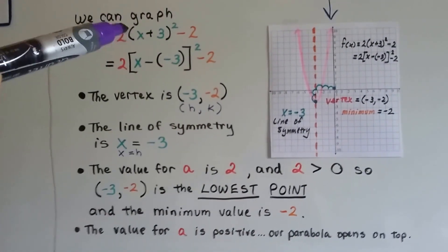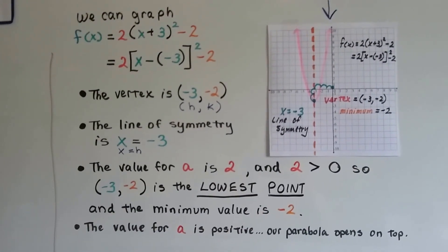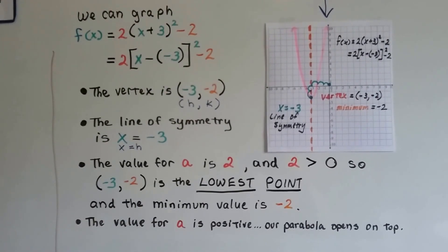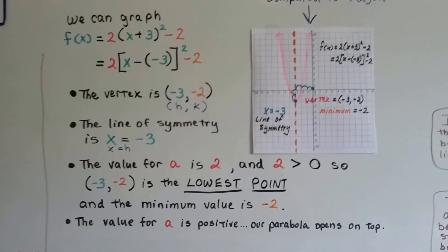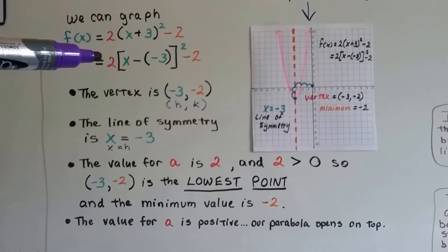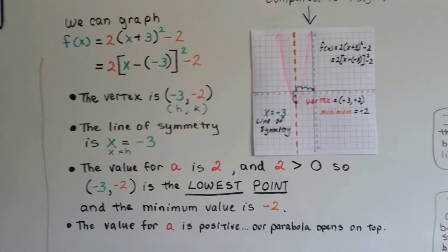The value for a is a two, and two is greater than zero, so that's our lowest point. That negative two is our minimum value, and the value for a is positive, so our parabola opens on top.